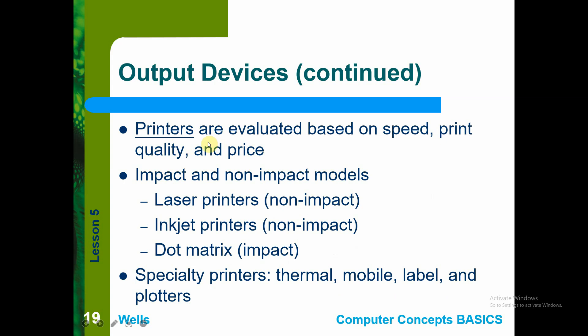Printers are rated based on speed and print quality, and are categorized as impact and non-impact models. Impact printers have a physical component that types output through repeated impact. The dot matrix printer is like an electronic typewriter — each letter is physically struck onto paper. This is the impact type model for your printer.